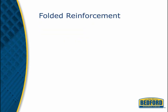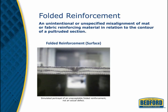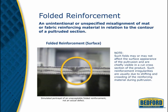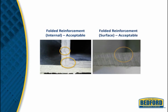Folded reinforcement is an unintentional misalignment of mat or fabric reinforcing material, usually due to shifting or crowding of the reinforcing material during pultrusion. Such folds may not affect the surface appearance of the pultrusion and are primarily visible in a cut cross-section of the product. Any fold that is 50% or less through the product's thickness is acceptable, even if a crack is present from the inside tip of the fold to the product's surface, as long as test requirements are met.